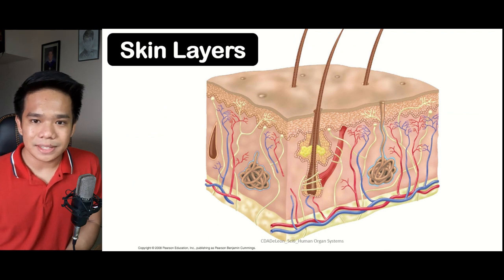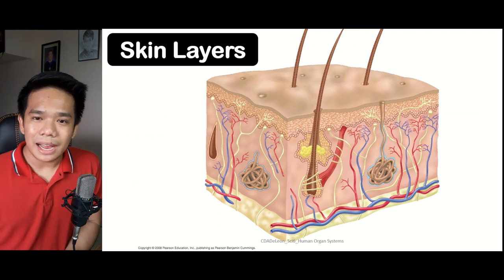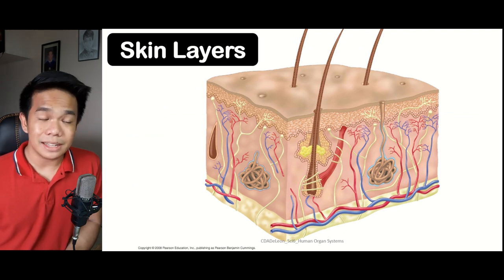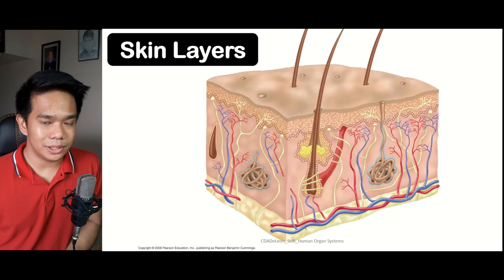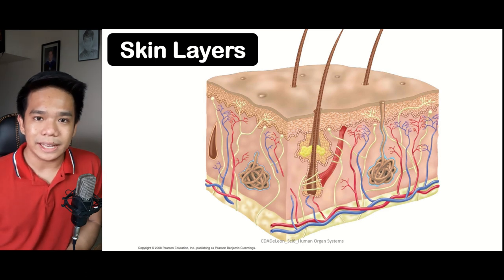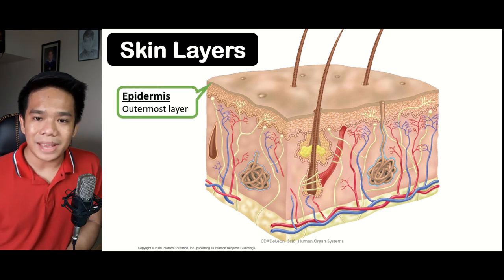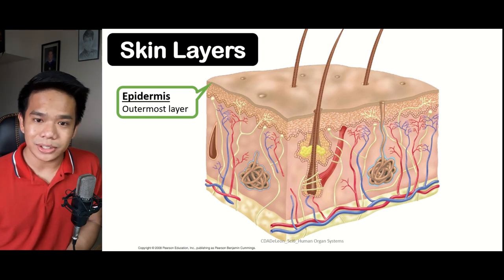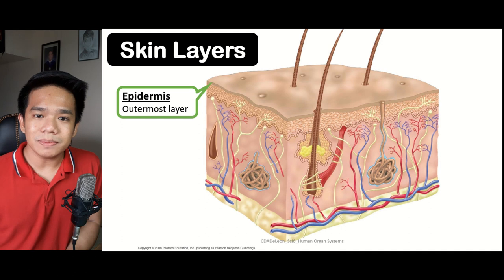We have the different layers of the skin. The skin is considered as the sense organ for sensation, but aside from that, the skin also serves many functions as well. The first layer is the epidermis, which is considered as the outermost layer of the skin in which most of the dead skin cells can be found.